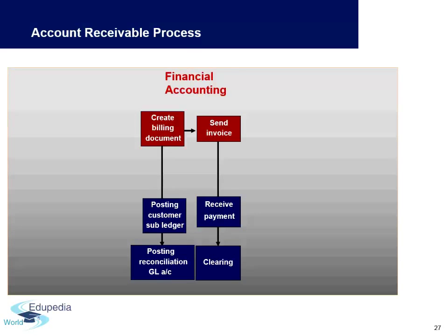Similar to the accounts payable process involving a vendor, the accounts receivable process involves a customer. The process starts when you create a billing document in the Sales and Distribution module. This billing document is also created automatically in finance at the same time, and an invoice copy is sent to the customer. Once this posting is done in finance, the reconciliation account is triggered.